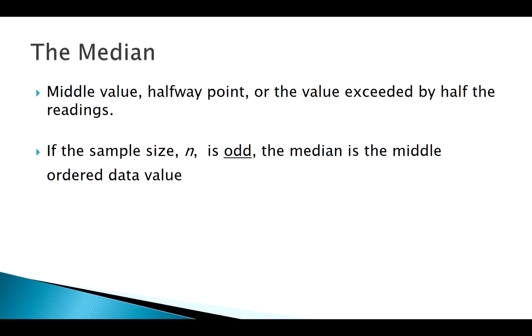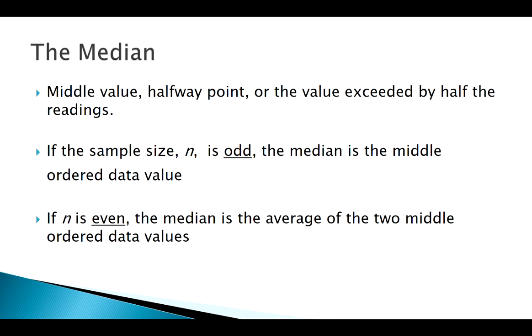But remember, it kind of changes based on whether my data set is odd or even, right? If it's odd, my median will be included in my data set. It's that exact middle value. If it's even, I've got to find those two middle values and then take the average. So we're going to just look at this quickly. I think this should be familiar to a lot of people.